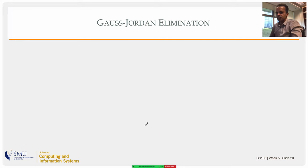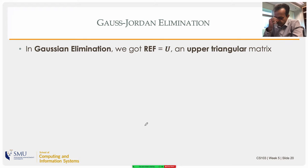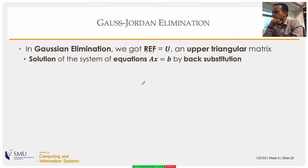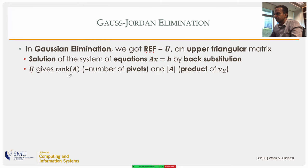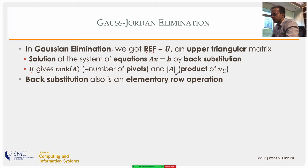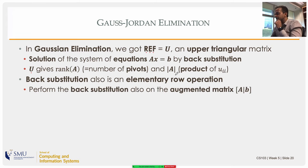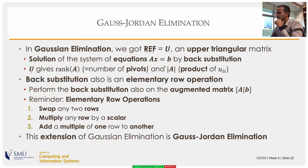Gauss-Jordan elimination extends Gaussian elimination. Gaussian elimination gives the row echelon form — an upper triangular matrix — and you solve via back substitution. Back substitution is itself an elementary row operation: scaling a row then subtracting it from rows above. Gauss-Jordan elimination is Gaussian elimination plus those back-substitution steps, so you get the solution directly in matrix form.